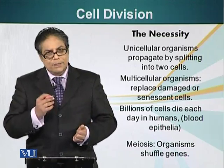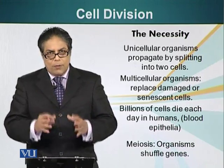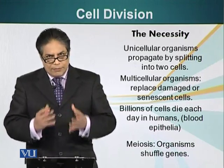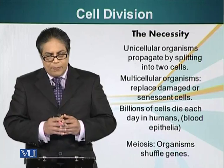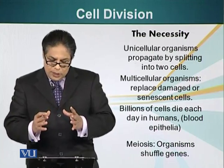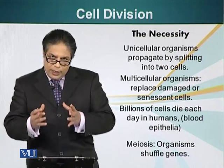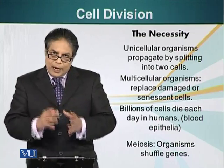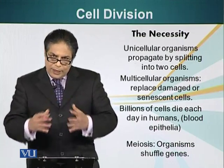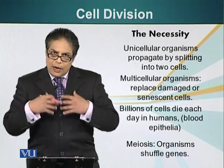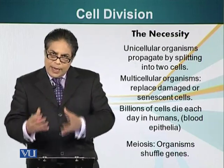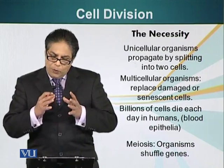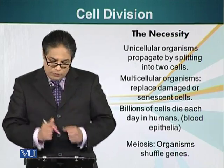Additionally, a special type of cell division called meiosis — we will talk about this process in more detail later on. This ensures the organism shuffles its genes, allowing different combinations and allowing natural selection to take place, selecting organisms with the best combination of genes.